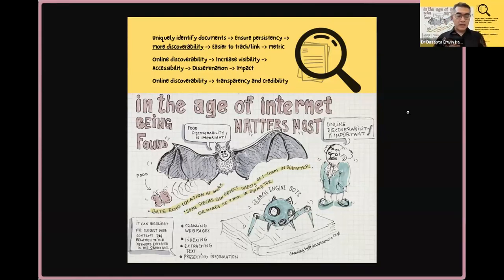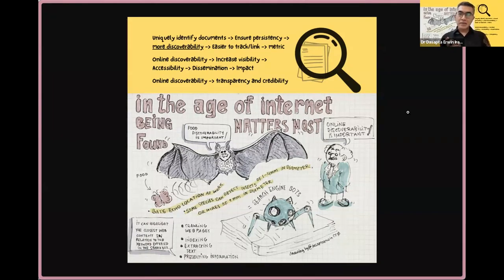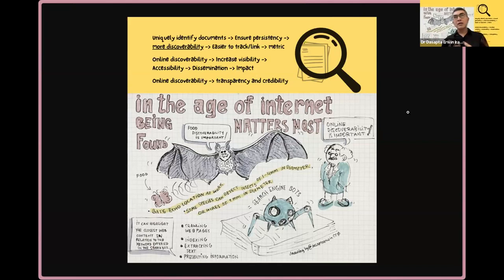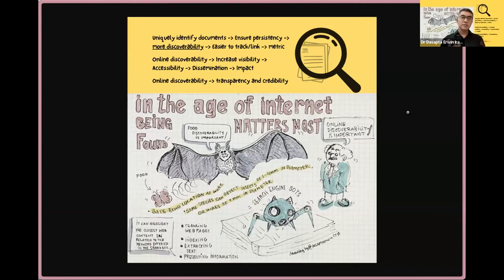The impact of grey literature can especially benefit local communities, since these documents address local problems. On the other hand, commercial social media like ResearchGate use DOIs and are more popular with the scientific community than non-commercial technologies like institutional repositories. So the DOI and other types of PIDs should also be applied to grey literature, not only peer-reviewed journals. We need to build this awareness among science policymakers and university leaders, especially in Indonesia.